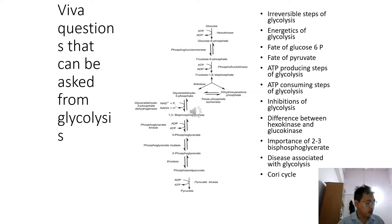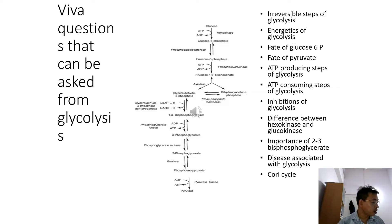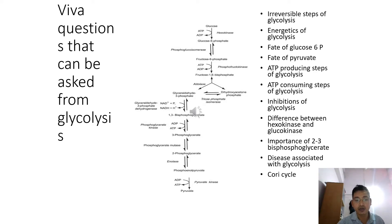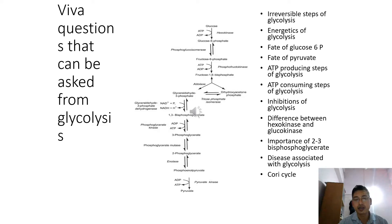This oxaloacetate can enter the gluconeogenesis pathway to get converted into glucose. Pyruvate can also be converted to malate by the malic enzyme, and this malate can enter the gluconeogenesis pathway. Pyruvate can also be converted to alanine by a transamination reaction. And in bacteria, pyruvate can also be converted to alcohol. So these are the different fates of pyruvate.